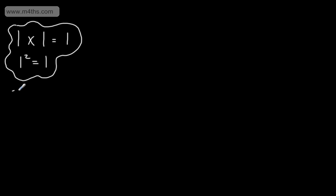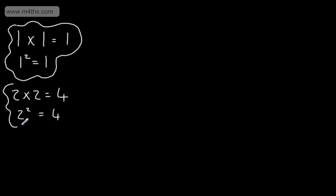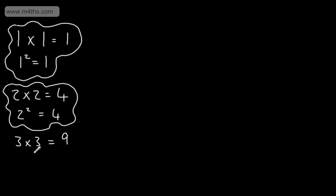Let's now take the number 2. If we take the number 2, 2 multiplied by 2, so we have the same number, that will give us 4. We can say that 4 is a square number. So the square of 2 gives us 4. If we did this for 3, we could do 3 multiplied by 3, and the result is a square number. So we can say that 9 is a square number. We can write 3 squared is equal to 9.